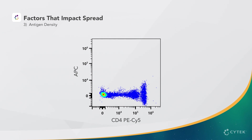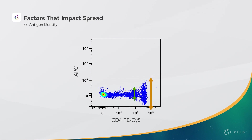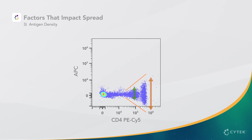The density of the antigen is the last factor that impacts spread. Here, we can see CD4 PE-Cy5 has a continuous pattern of expression, with the dimmer population indicating monocytes and the brighter population indicating CD4 positive T cells. As the level of antigen density increases, so does the spread, resulting in a hallmark trumpet shape.